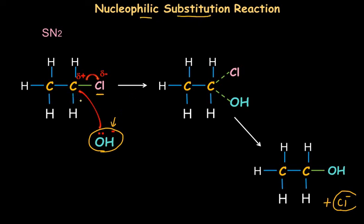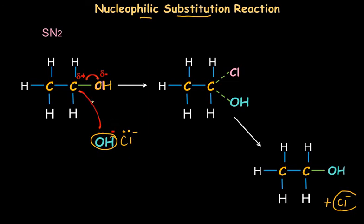The same reaction mechanism applies to alcohols also. In primary alcohols, in place of chlorine you may find an OH group, and in place of OH you may find a chlorine or any other halogen species with a negative charge. The same mechanism will happen again with reactions of alcohols. I hope SN2 mechanism is very clear, and in the next video we will be learning about SN1 mechanism.